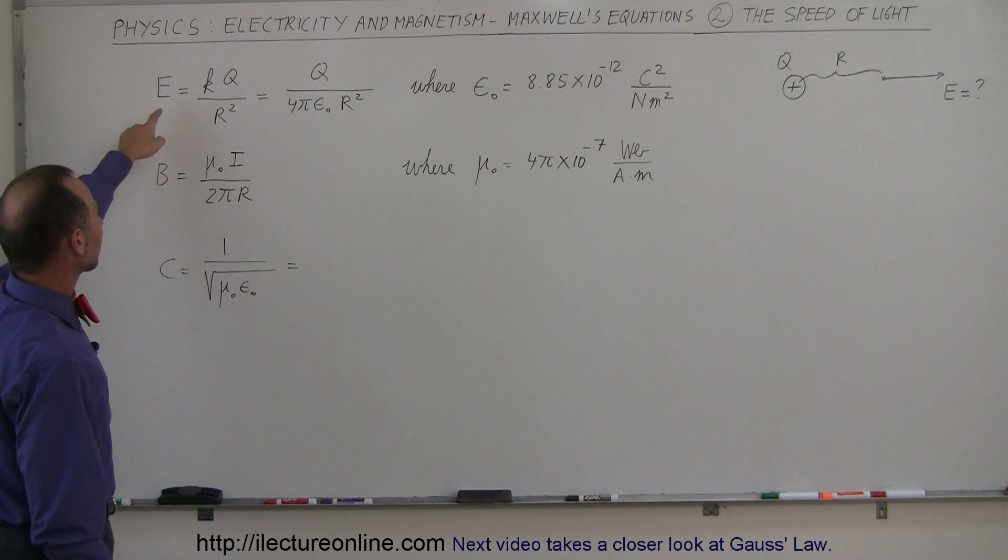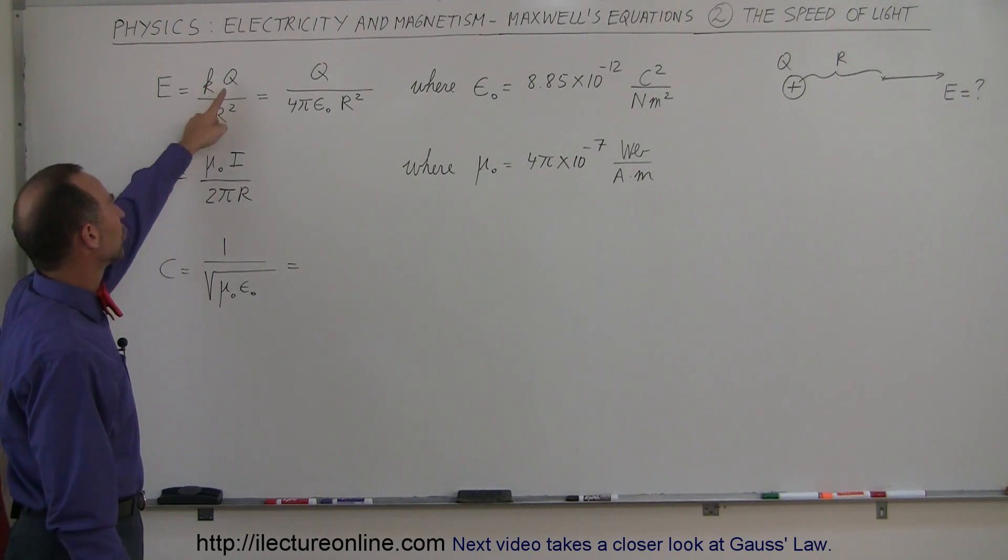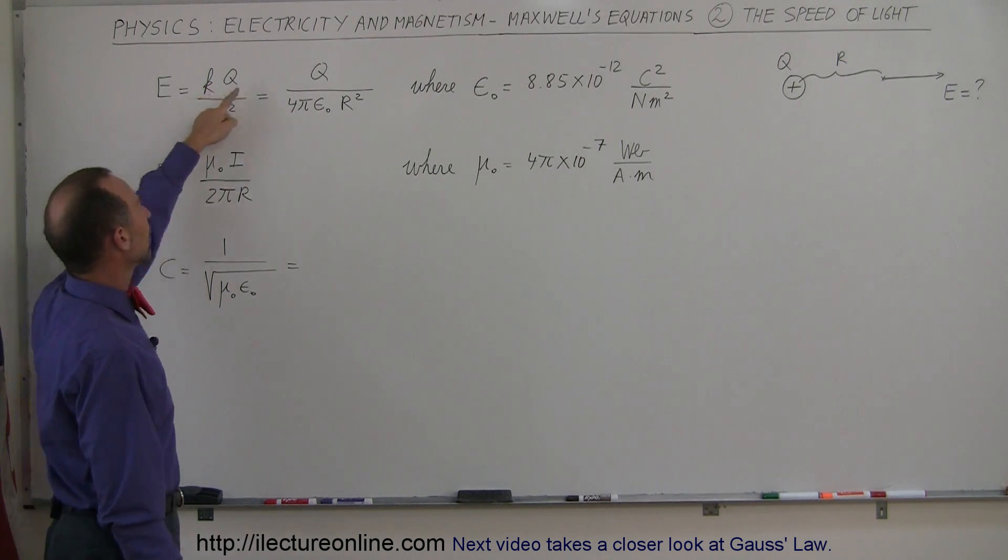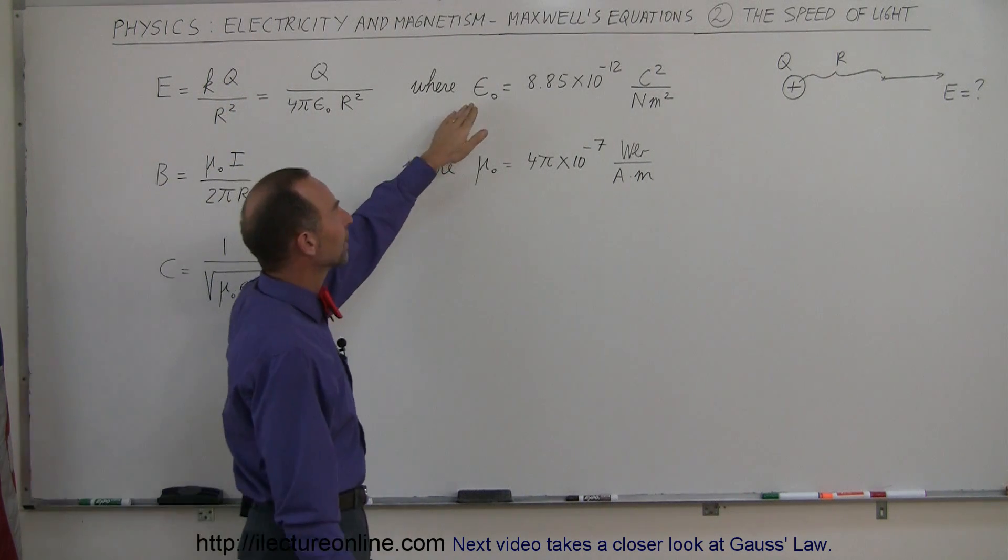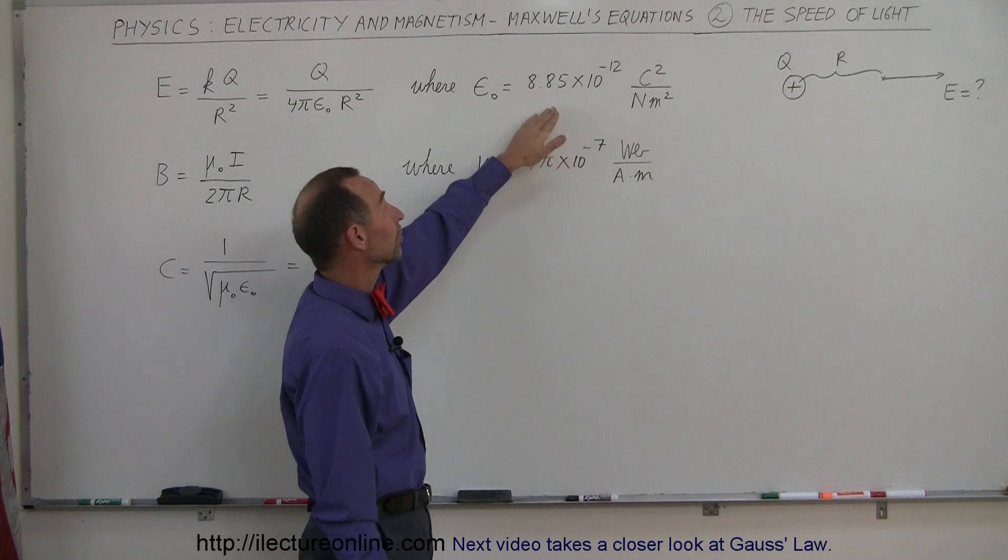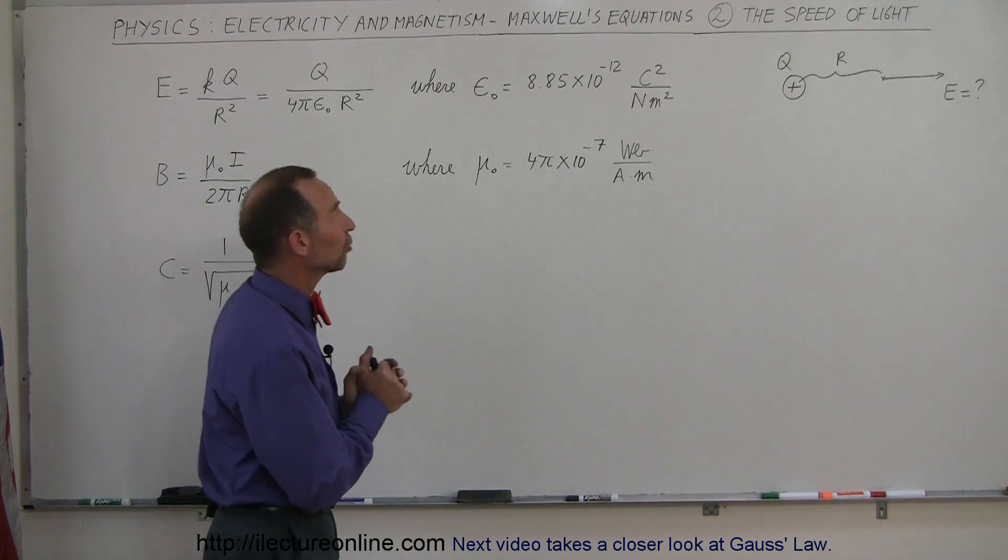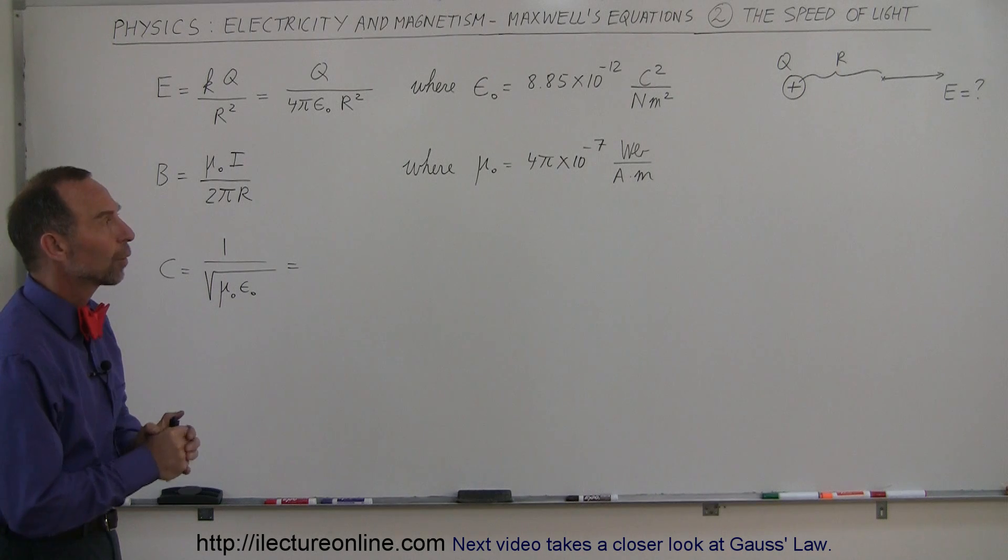it was known that the strength of electric field is equal to k times q divided by r squared. And k can be written as 1 over 4π epsilon sub nought, where epsilon sub nought is the permittivity of free space for electric fields of 8.85 times 10 to minus 12 coulombs squared per newton per meter squared.